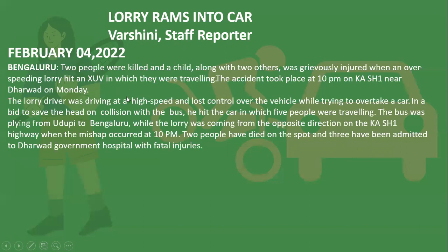The second paragraph gives supporting details in order of importance. For example: the lorry driver was driving at high speed and lost control while trying to overtake a car. In a bid to avoid a head-on collision with a bus, he hit the car in which five people were travelling. The bus was plying from Udupi to Bengaluru while the lorry was coming from the opposite direction on NH-1 when the mishap occurred at 10 p.m. Two people died on the spot and three were admitted to Dharwad Government Hospital with fatal injuries.